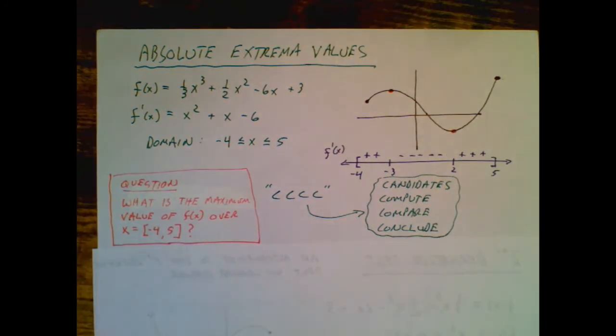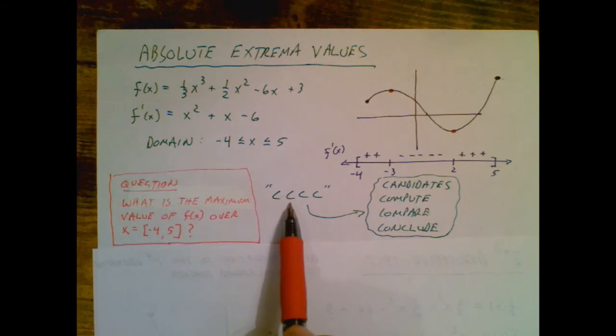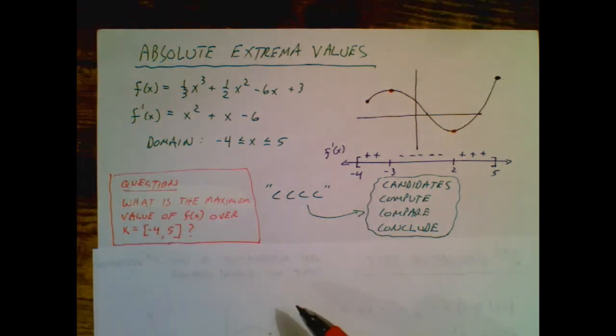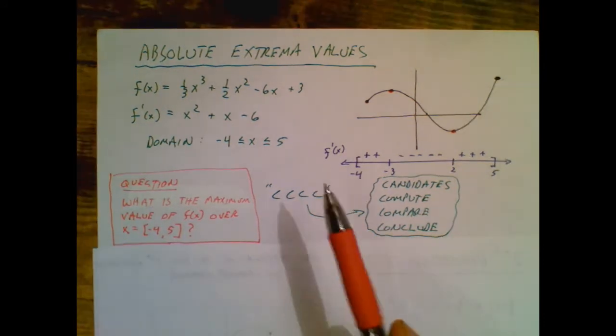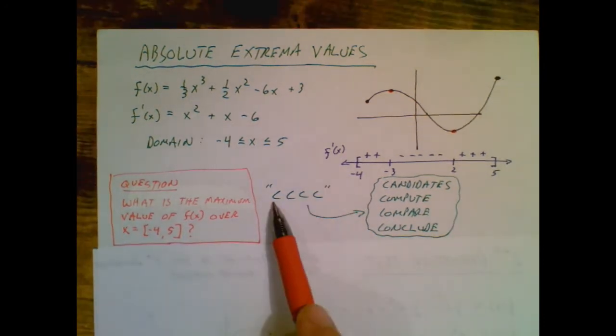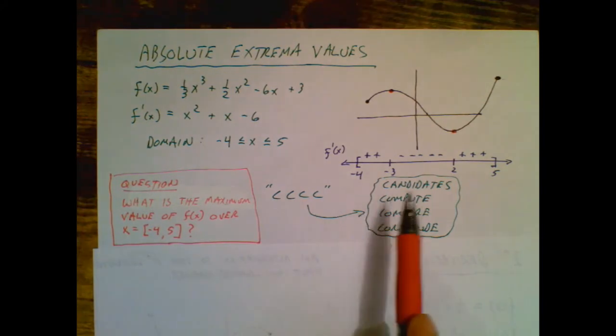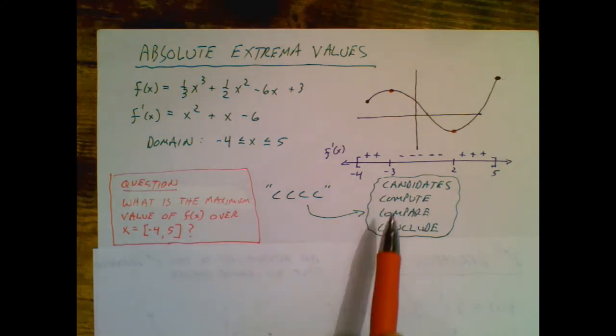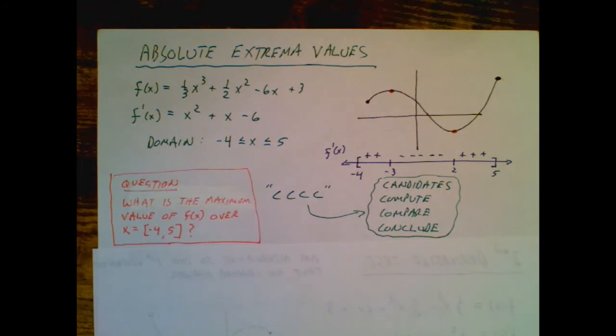But we've got to figure out that, and we also have to use this AP style. I use this little memory device called CCCC, that if you follow this memory device, you will get all the AP rubric partial credit, no matter what, assuming you're doing the math right. So these four C's stand for candidates, compute, compare, conclude, and what that means will become evident as we go through here.